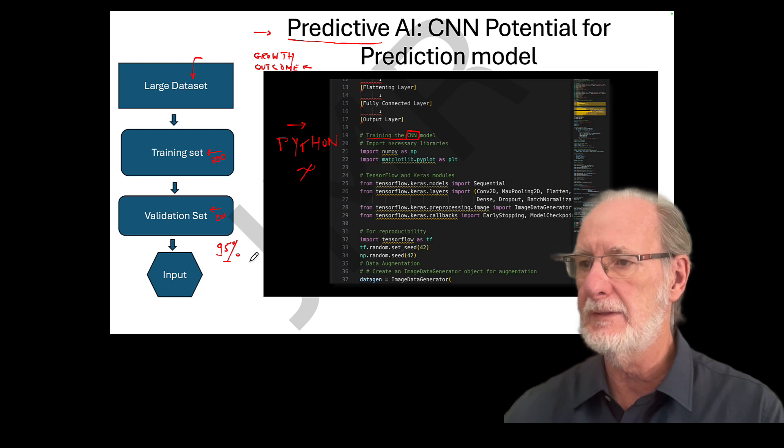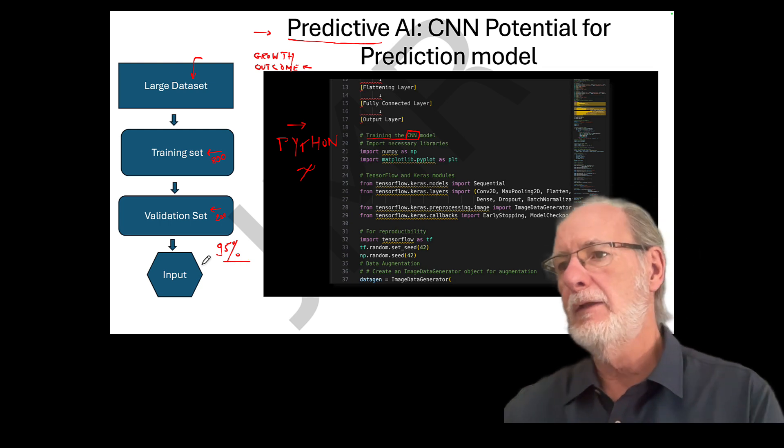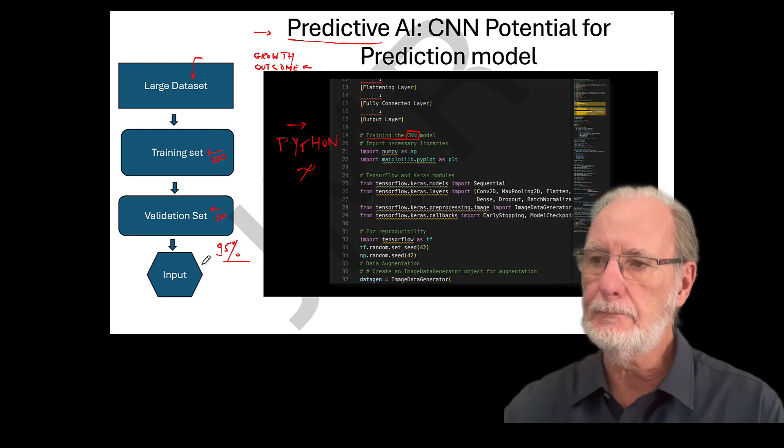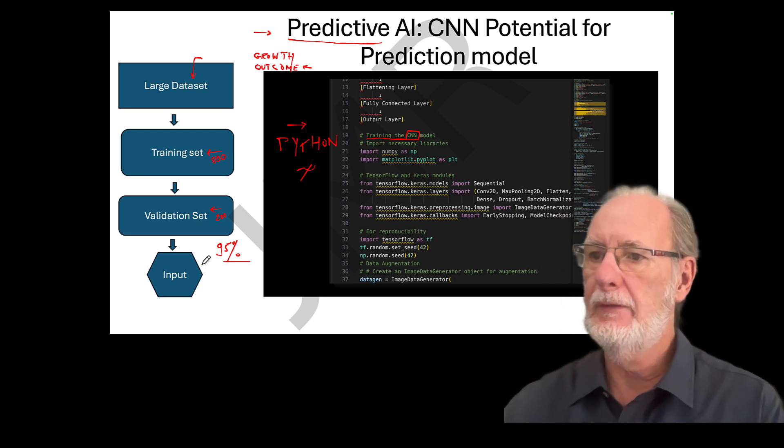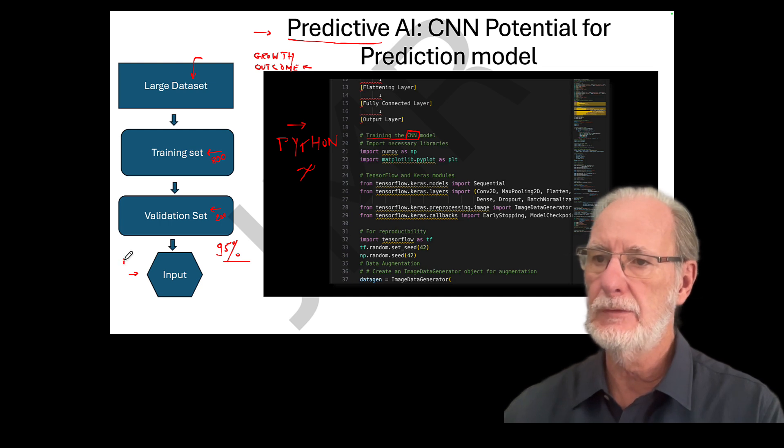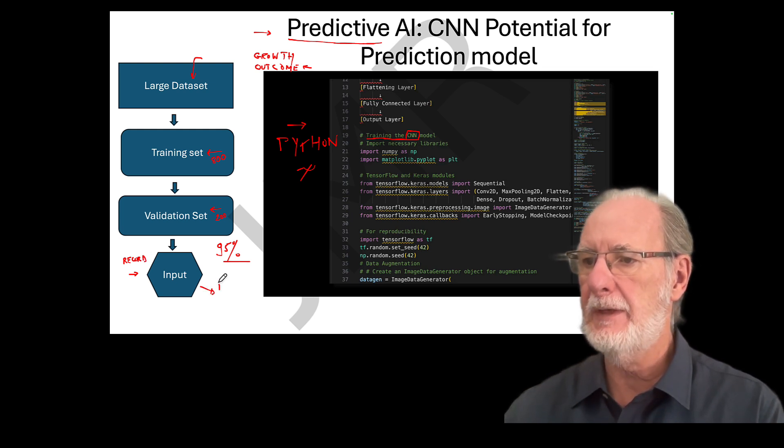And once it's validated, which means that you are roughly at 90 to 95% accuracy rate, meaning the machine learning system can predict your questions at 95%. So if you have the truth, then you will put your own input, meaning you put one of your records in it. And you will get a prediction. So that's basically what is coming along and coming soon into our world.